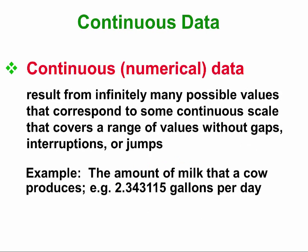Continuous data are data where for every two numbers we can find a number in between. In the example, the amount of milk that a cow can produce — we have a sixth place decimal, and between that decimal and the next sixth place decimal, we can find many seven place decimals or even eight place decimals. So between any two numbers there is always another number.